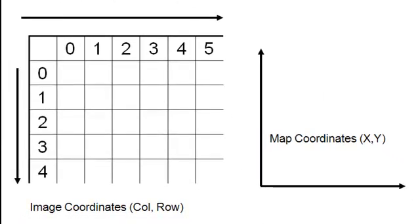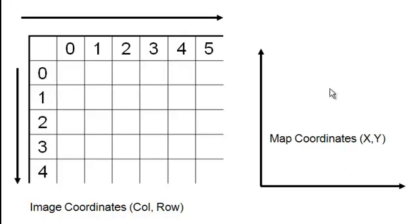One thing to keep in mind is the relationship between columns and rows and our map coordinates. As we go from left to right, the column number increases, and in most map coordinates the X value also increases — a positive relationship. There's a negative relationship between the image row number and the map Y: as we go down, row number increases, but the Y value decreases.